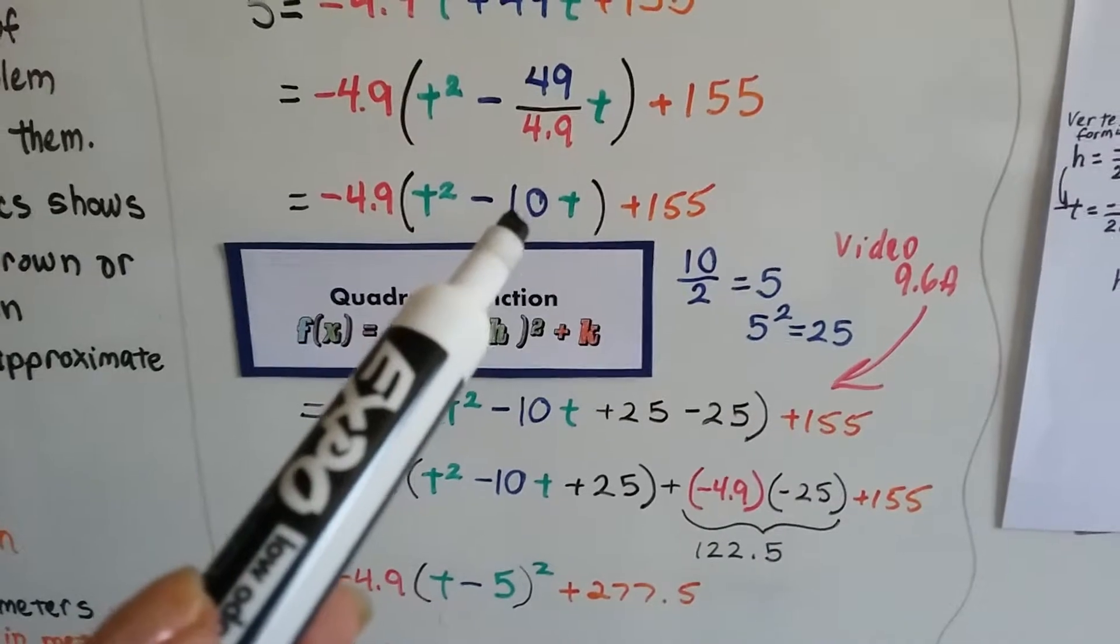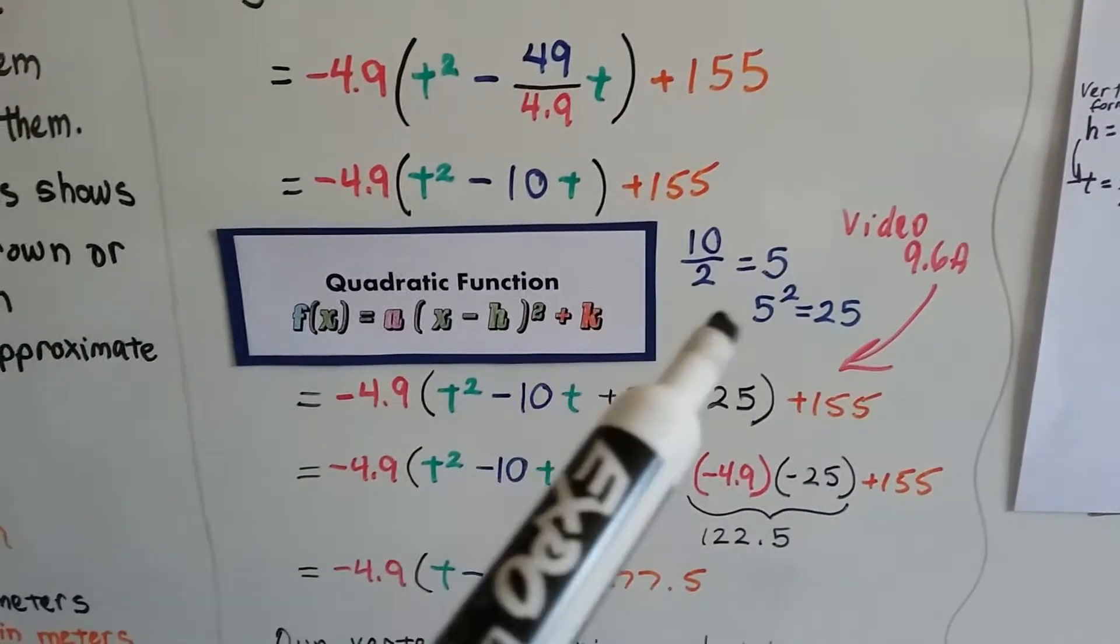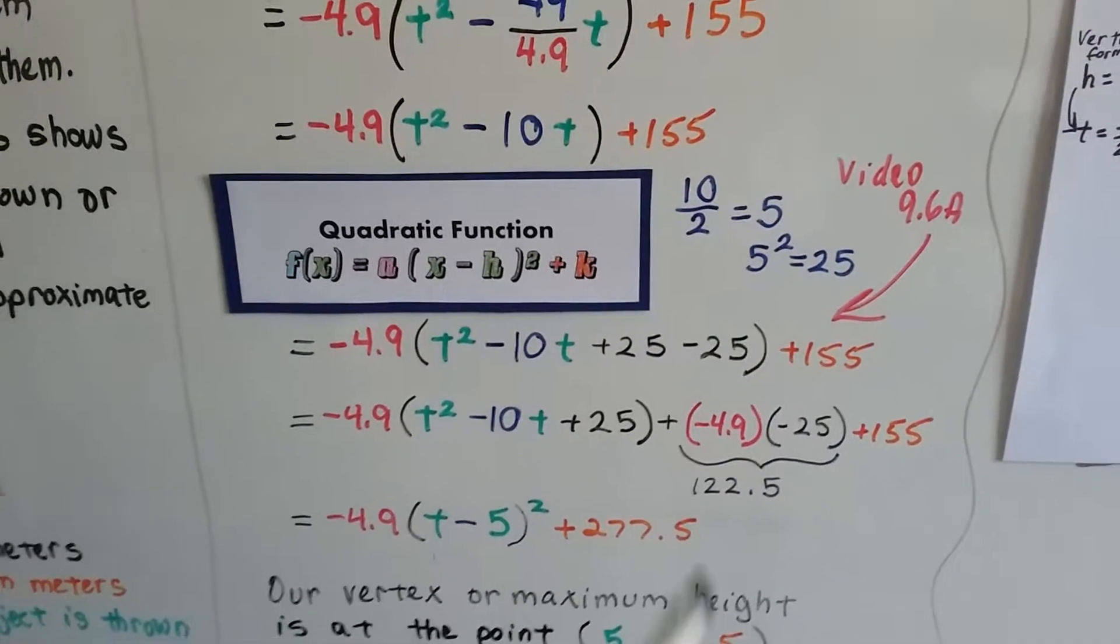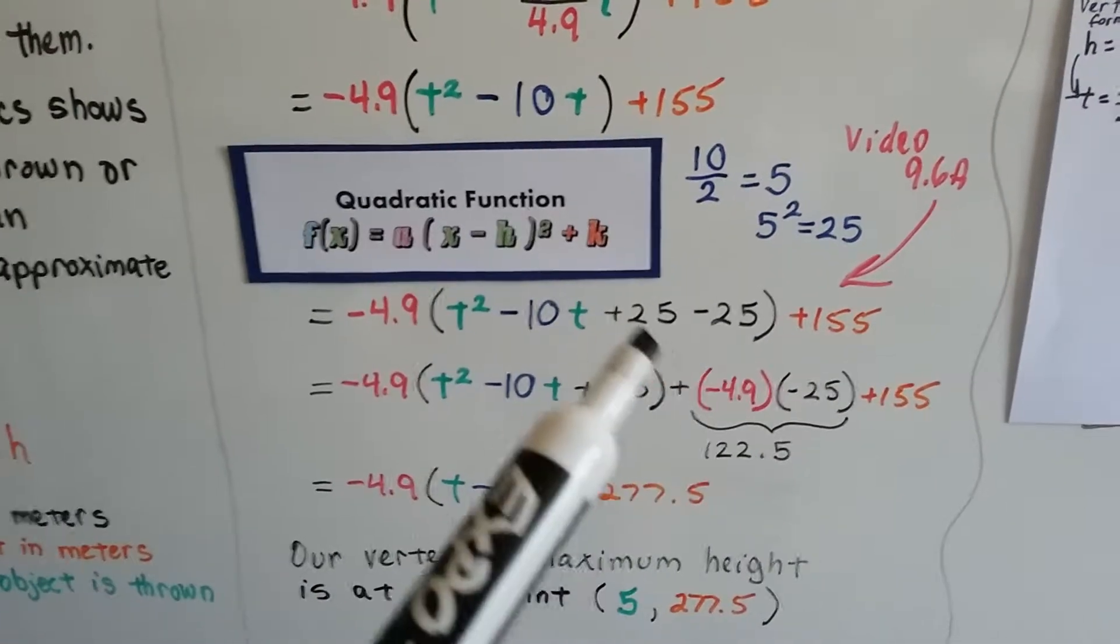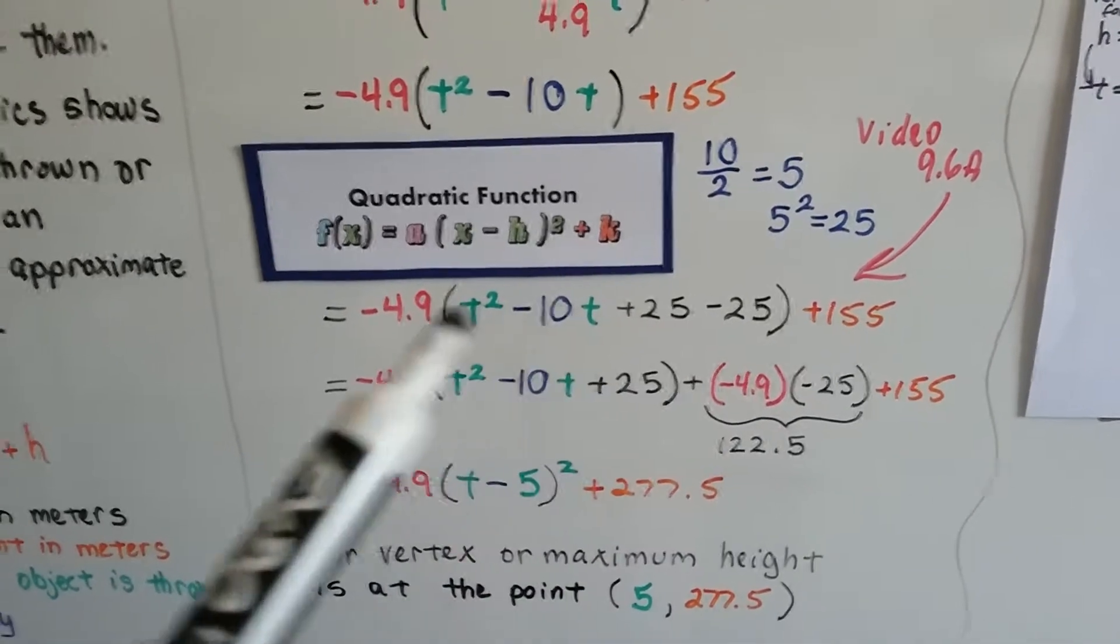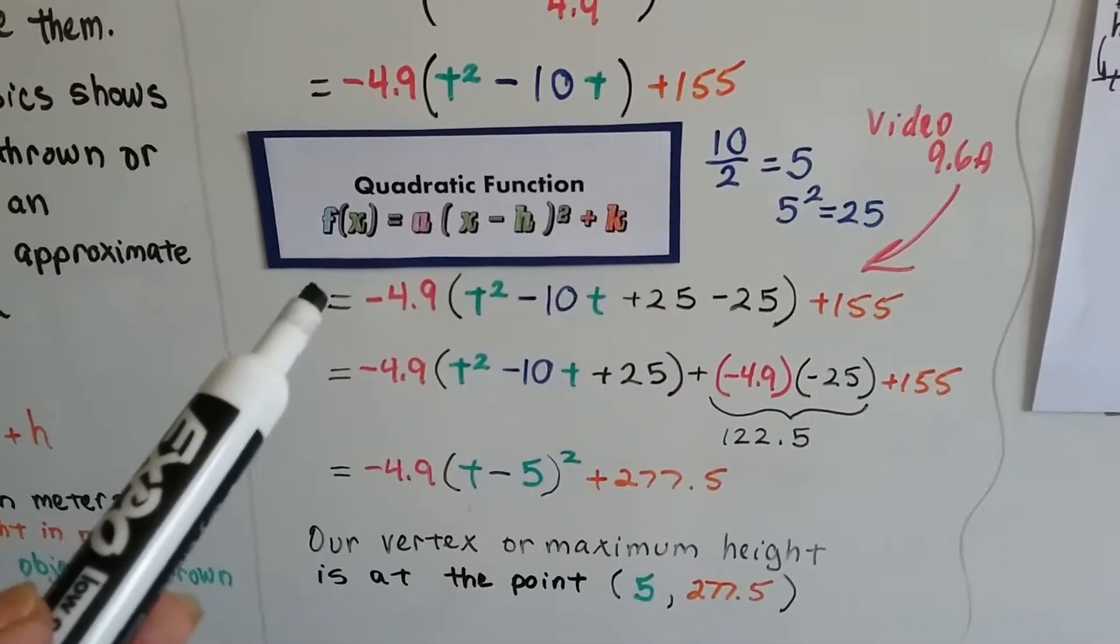Now we can complete the square. We divide this in half, we get a 5. We square it, we get a 25. We covered this in video 9.6a. We're going to add and subtract the same value because this is a zero pair additive inverse. It doesn't affect the formula at all.